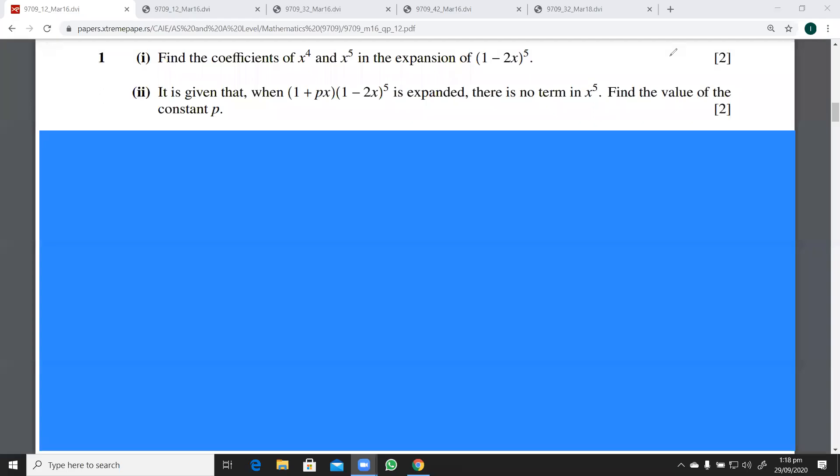I have a question here from March 16. It's to find the coefficient of x⁴ and x⁵ in the expansion of (1 - 2x)⁵. For x to the power four, I can say that this is simply going to be 5C4.